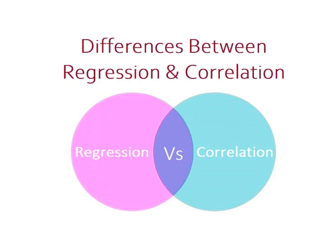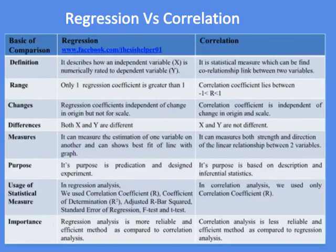Differences between regression and correlation. Regression versus correlation. The definition of regression is that it describes an independent variable x numerically related to dependent variable y, while the definition of correlation is that it is a statistical measure which can find the co-relationship link between two variables.